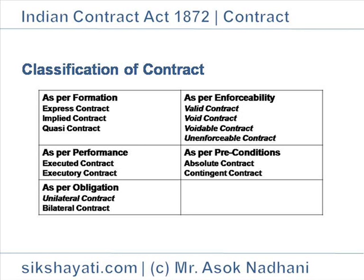As per extent of execution or state of performance, a contract may be classified as Executed Contract — when a contract has been executed completely by both parties. Example: A agrees to pay B Rs. 200 for mowing his garden. B mows and A pays Rs. 200 to B. This is an executed contract as each party has performed their respective obligation.